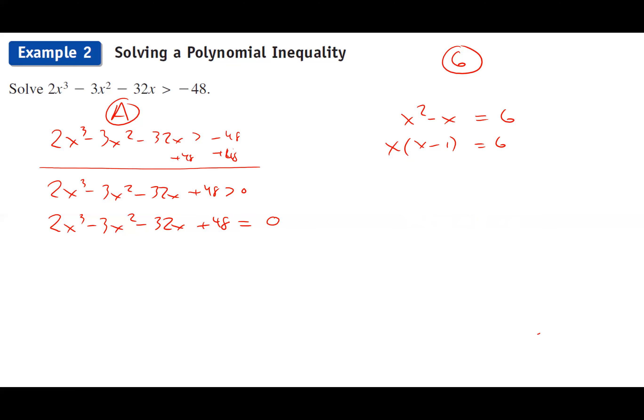We have four terms, so let's try factoring by grouping. With two groups of two terms each, pull the greatest common factor from each pair. From the first pair, factor out x², leaving the binomial. From the second pair, factor out -16, leaving the same binomial. Then pull out that common binomial factor.